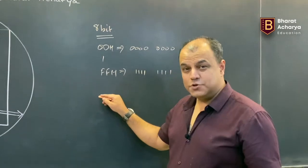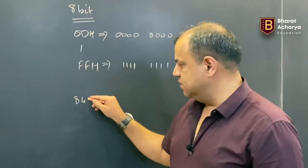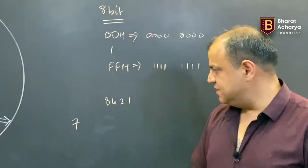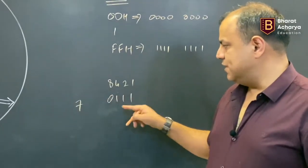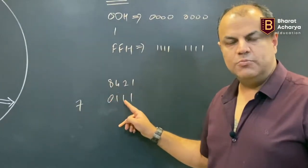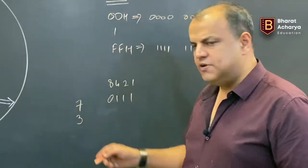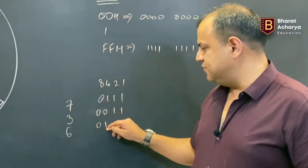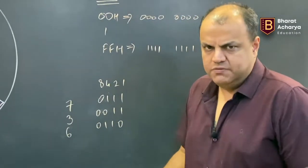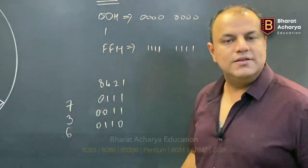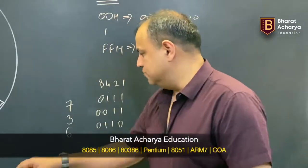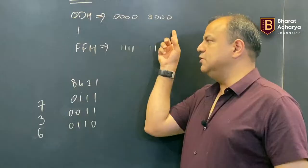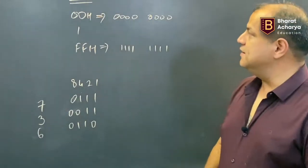The shortcut to get the binary value of any number uses the 8-4-2-1 breakdown. For 7: 4+2+1, so 0111. For 3: 2+1, so 0011. For 6: 4+2, so 0110. F is 15, which is 8+4+2+1, so 1111. So the range of an 8-bit number is 00 to FF.